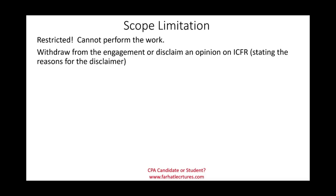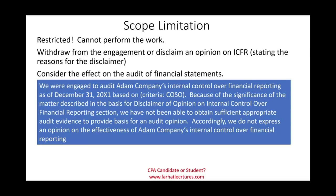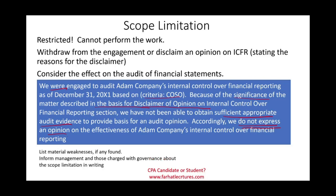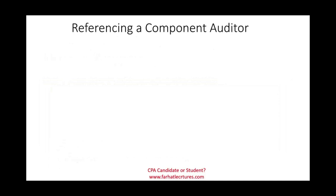Under a scope limitation we can withdraw from the engagement or disclaim an opinion, stating the reasons for the disclaimer. We also need to consider the effect on the audit of the financial statements. A disclaimer would look like this: 'We were engaged to audit Adams Company's internal control based on COSO. Because of the significance of the matter described in the basis for disclaimer of opinion, we have not been able to obtain sufficient appropriate audit evidence to provide a basis for an audit opinion; accordingly, we disclaim an opinion on the effectiveness of Adams Company's internal control over financial reporting.' If any material weaknesses were found before reaching this point, you would list them, and you must inform management and those charged with governance about the scope limitation in writing.